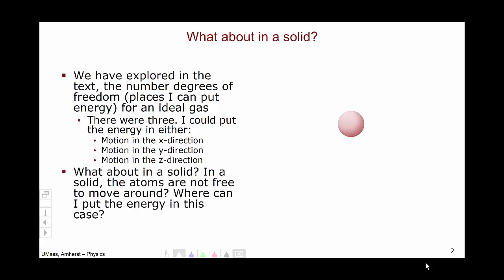What about in a solid? In a solid, the atoms are not free to move around. Where can I put the energy in this case? I can clearly add energy to a solid, I can put it over a flame. What are the different microscopic places, different degrees of freedom, that are possible in a solid?